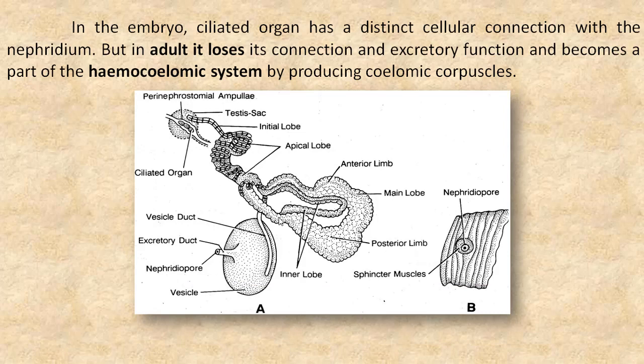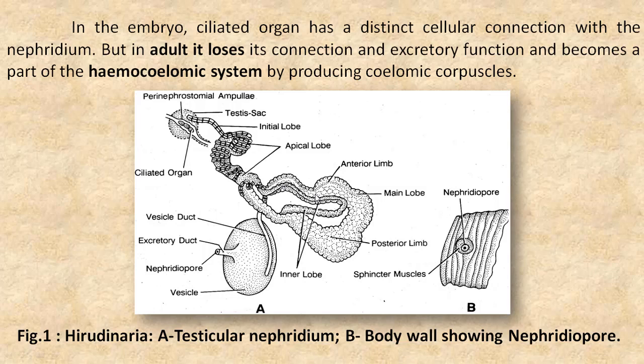So far we have seen the various parts of testicular nephridium: the horseshoe-shaped main lobe, the bladder-like vesicle, a narrow vesicle duct, the inner lobe in the concavity of the main lobe, the walking-stick-like apical lobe, the cord-like initial lobe which ends in the testis sac, and the ciliated organ in the perinephrostomal ampulla.